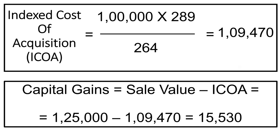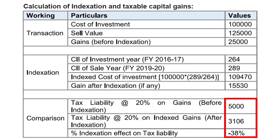Next, we calculate the ICOA. For this, we multiply 1,00,000 by 289, which is the CII for the year of sale, divided by 264, which is the CII for the purchase year. This gives us a result of 1,09,470. So the capital gains after indexation is 1,25,000 minus 1,09,470, which is equal to 15,530. So the tax liability at 20% before indexation is Rs. 5,000 and after indexation is Rs. 3,106, which is a reduction of 38% of your tax liability.